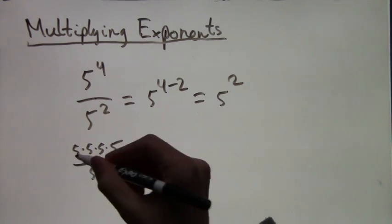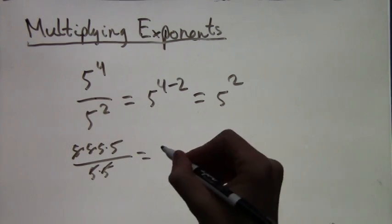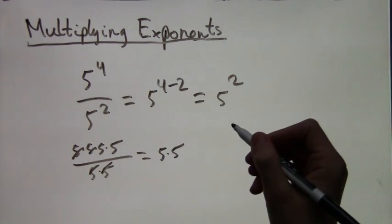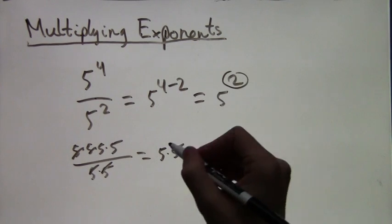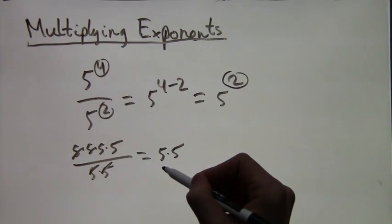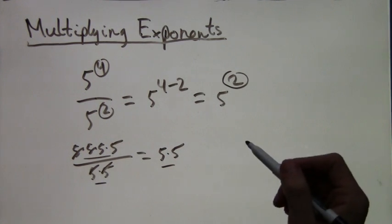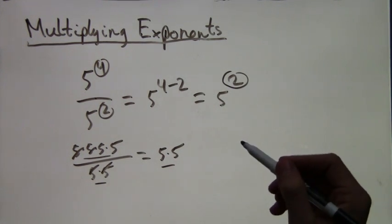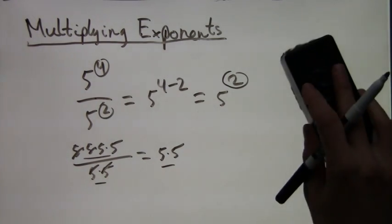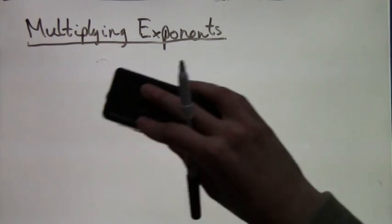Here's why. On top, 5 to the fourth is just four fives multiplied. On the bottom we have two fives multiplied. So we can cancel on top and bottom — we get rid of two fives. In other words we subtract from four fives two of them, so we end up with 4 minus 2 — three fives, or five squared. That's why these rules work.